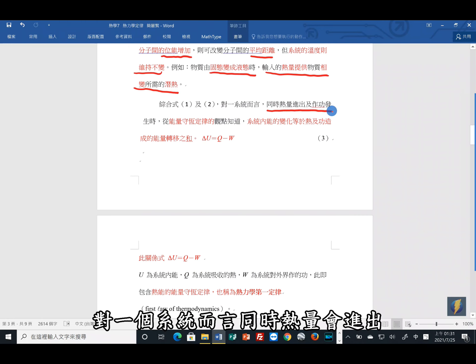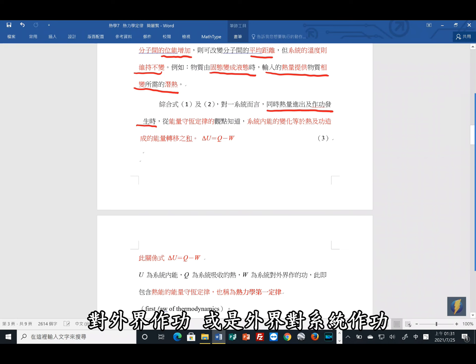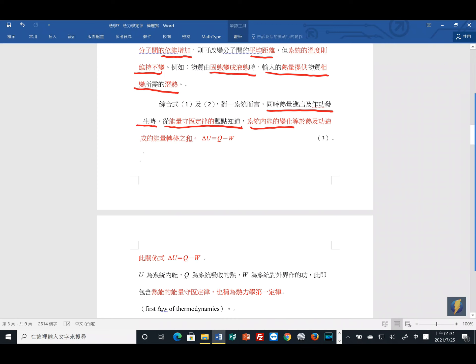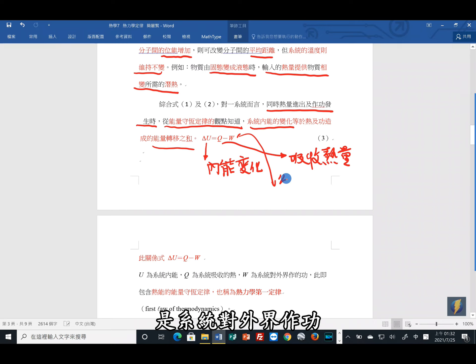所以综合前面的一跟二,对一个系统而言,同时热量会进出,还有对外界做功,或者是外界对系统做功。从能量守恒定律的观点可以知道,系统内部的变化是等于热跟功造成的能量转移。所以你可以知道的,这个ΔU是内能的变化。依照热能的能量守恒定律,这就是热力学的第一定律。